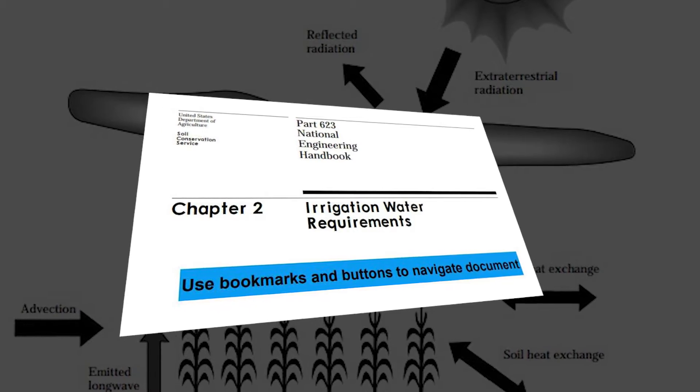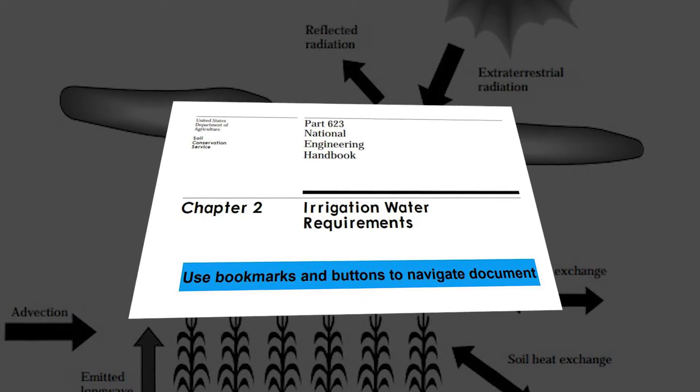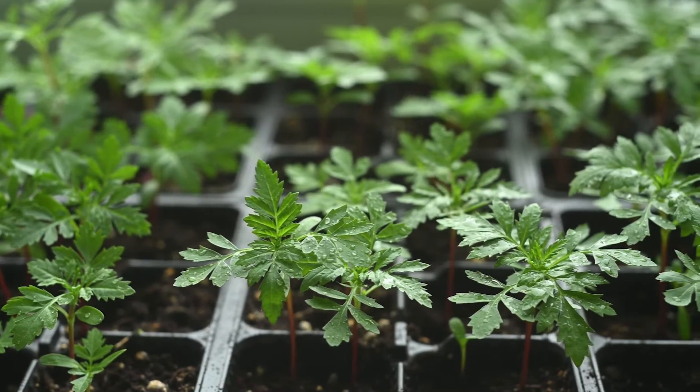Evapotranspiration is actually really important because it's the primary component of what you might call irrigation water requirements. ET really determines the amount of water required to maintain healthy plants. In a perfect world, we would give our plants exactly the right amount of water — no more, no less — just the right amount to be as healthy as possible. Evapotranspiration is the scientific term used to describe that amount of water.